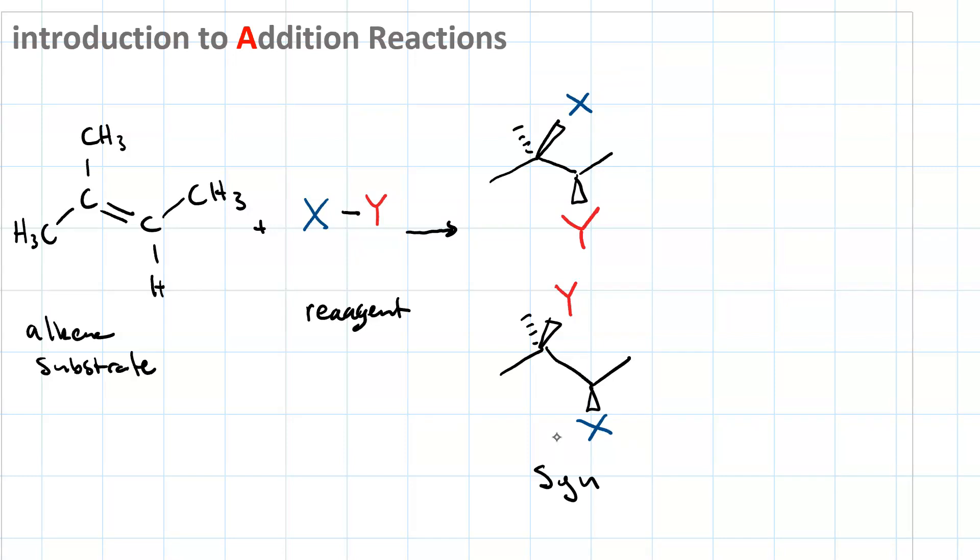And then the other stereochemical possibility is anti. So in anti addition, if x adds on a wedge, then y adds on a dash. So here are two anti addition possibilities. This is the stereochemical outcomes.